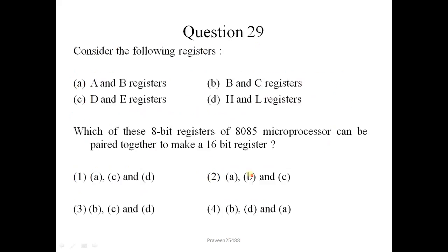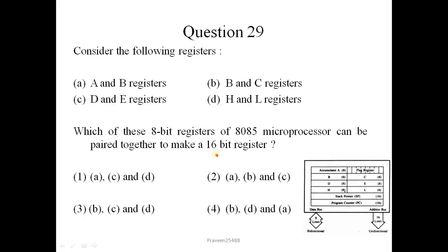Next question is question number 29. Consider the following registers: A and B registers, B and C registers, D and E registers, H and L registers. Which of these 8 bit registers of 8085 microprocessor can be paired together to make a 16 bit register? For this question, I will show you the register structure for 8085 microprocessor. Here is the register structure. Here you will observe that B and C both are 8 bit registers forms a pair and it becomes a 16 bit register. Similarly, D and E and H and L. Correct option is 3.